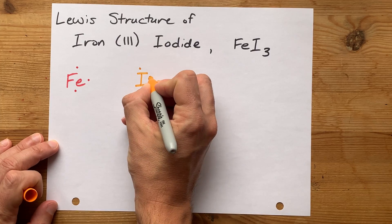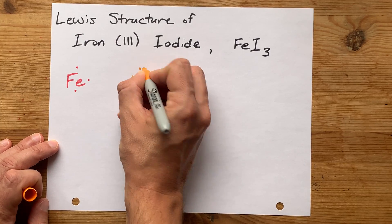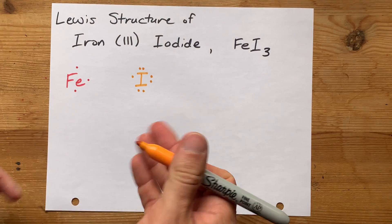So I'm going to draw my I with its 1, 2, 3, 4, 5, 6, 7 valence electrons.